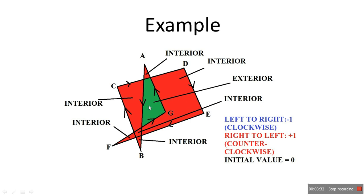Let's count for an example. The initial value is zero for this point. This edge is crossing the line from your right hand side to your left hand side — right to left — so you do plus one. Now the value is plus one. Then you encounter the next edge, which is going from your left hand side to your right hand side, so you do minus one. Plus one minus one gives a final answer of zero. When the answer is zero, it means the point is in the exterior.